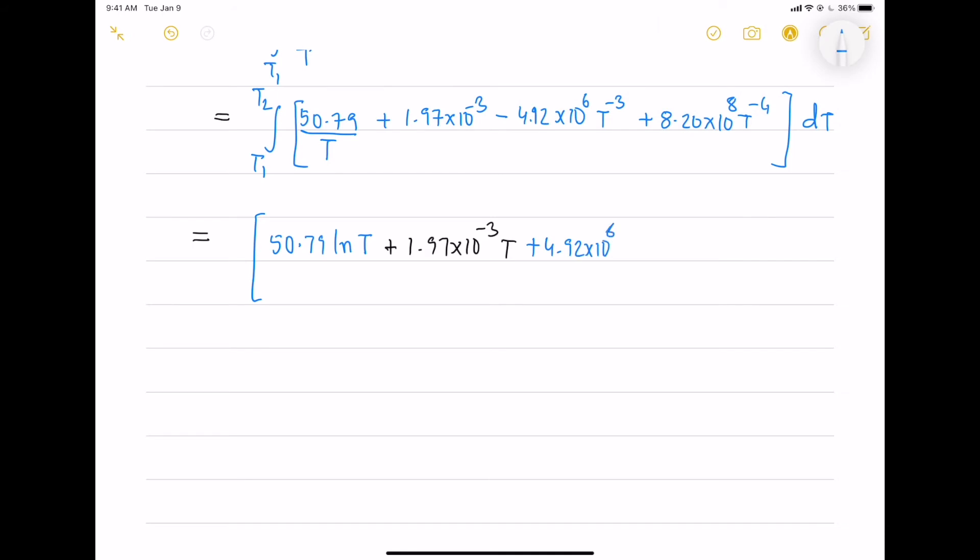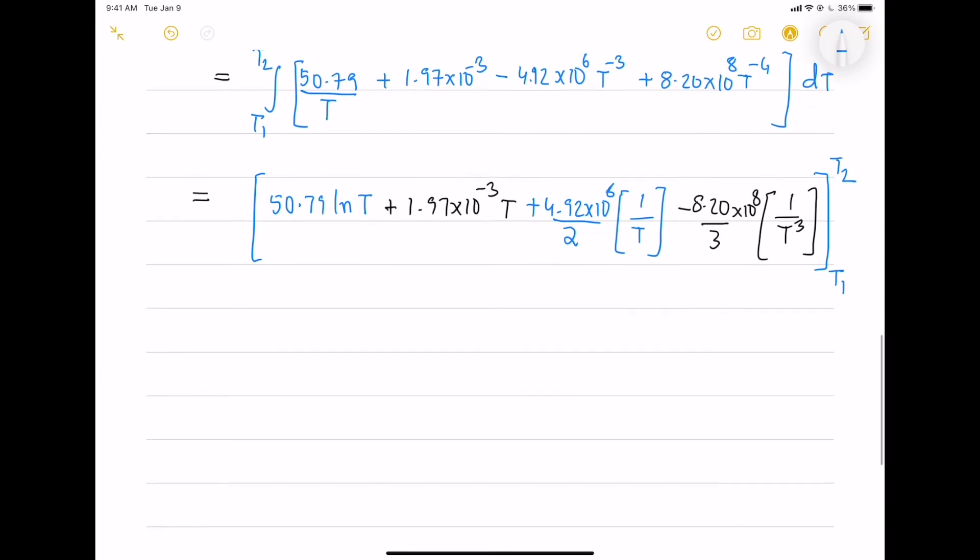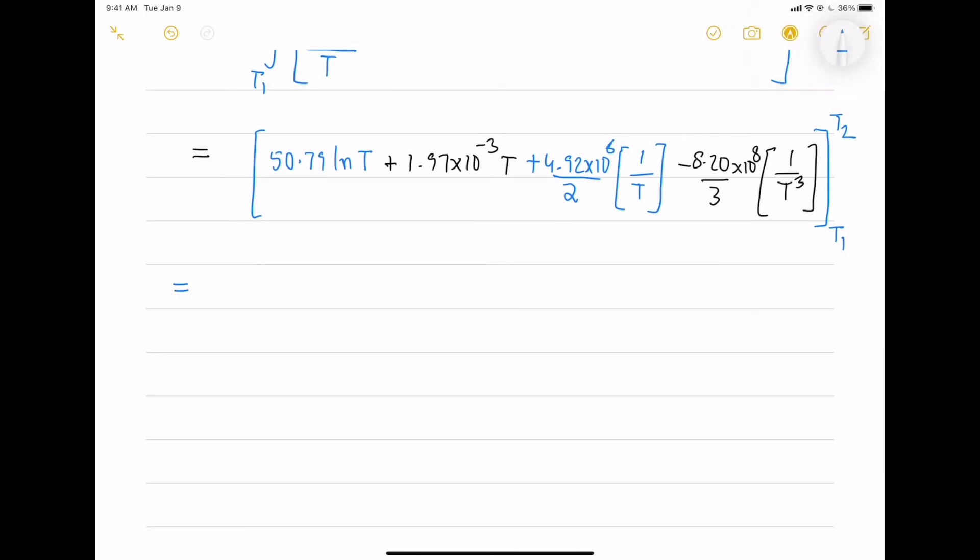The integral of 1 by t is ln t and dt is t and t power minus 3 by t is 1 by 2 minus 1 by 2t square and t power minus 4 is minus 1 by 3t power 3. Let's expand this by inputting the intervals of t1 and t2.